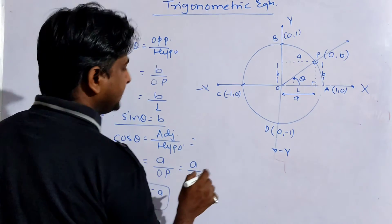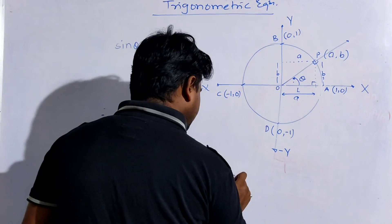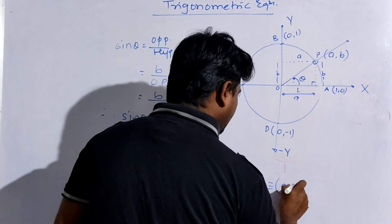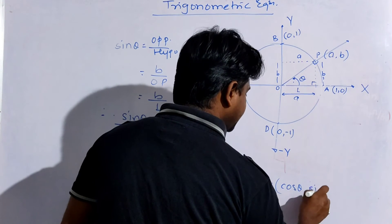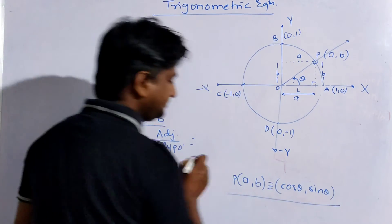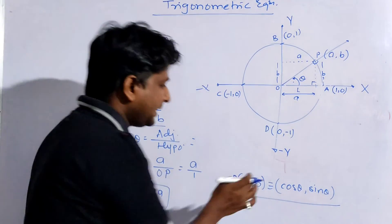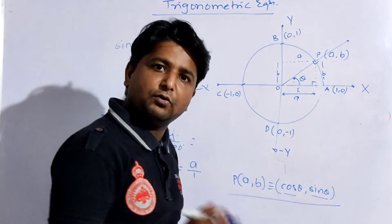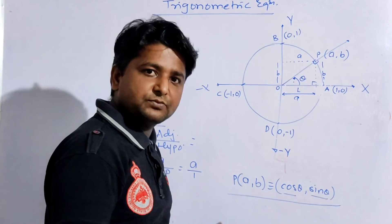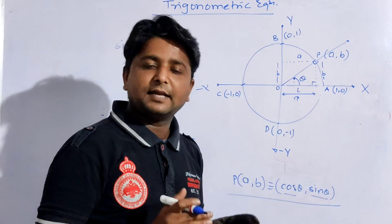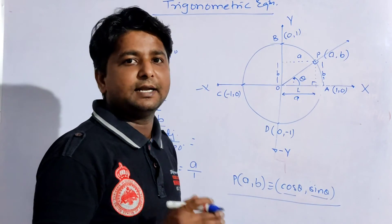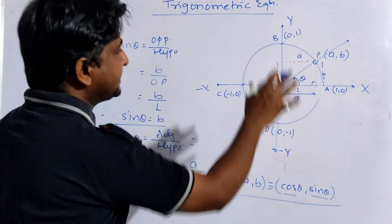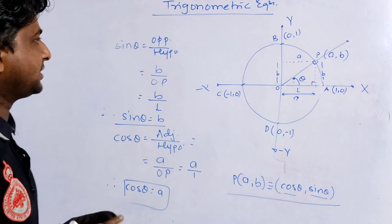Therefore, the coordinates of point P, which were (a,b), can be written as (cos theta, sin theta). Now, we can define this cos theta and sin theta for any angle. That is why now we will not be calling it as ratio, but we are defining it as a function. So this is the main reason that we have defined this unit circle. I hope this is clear.